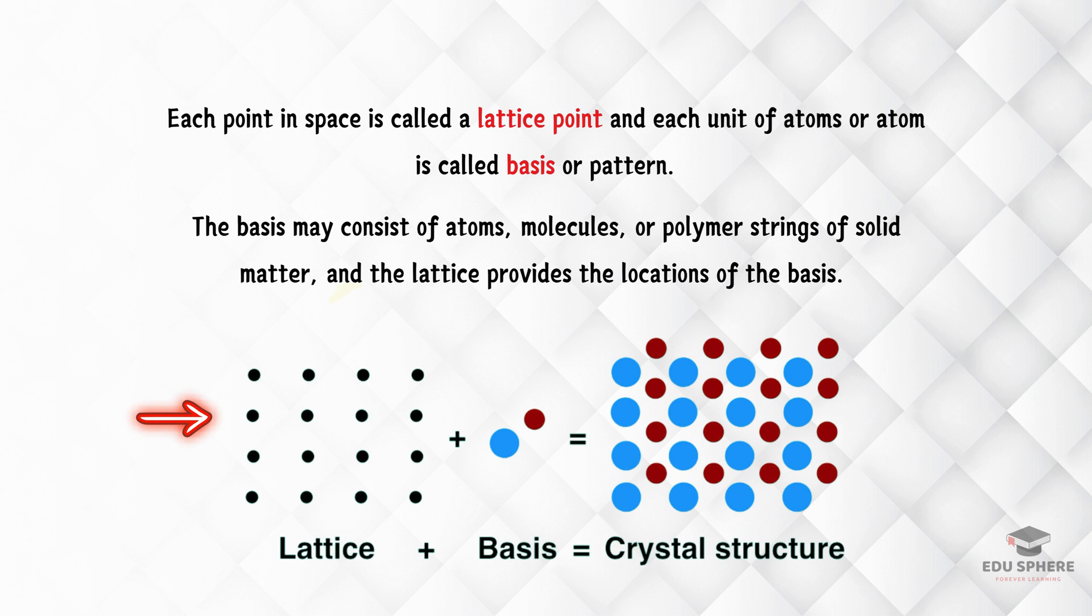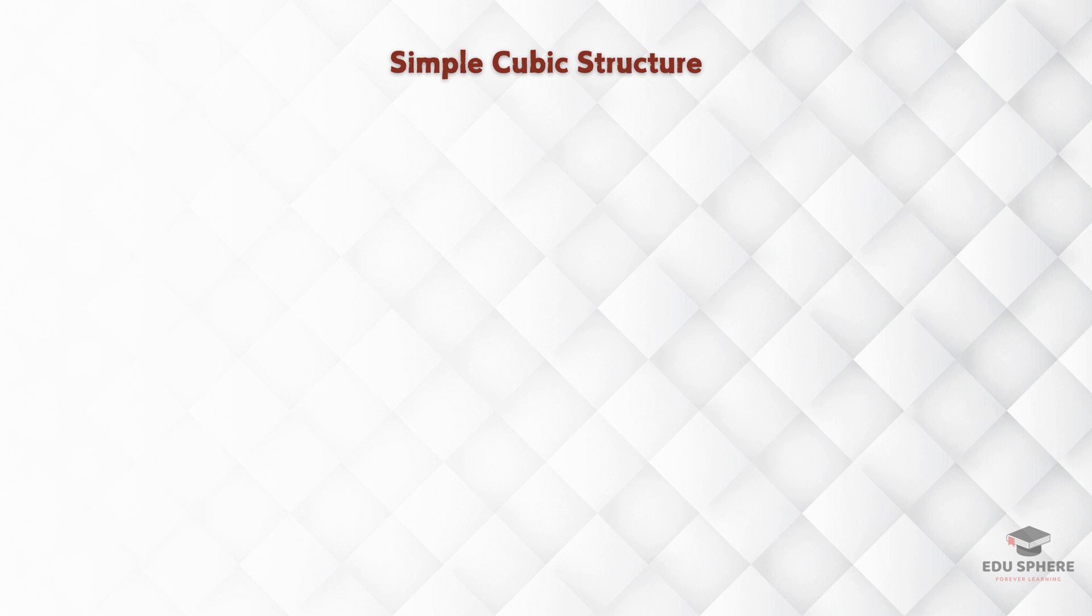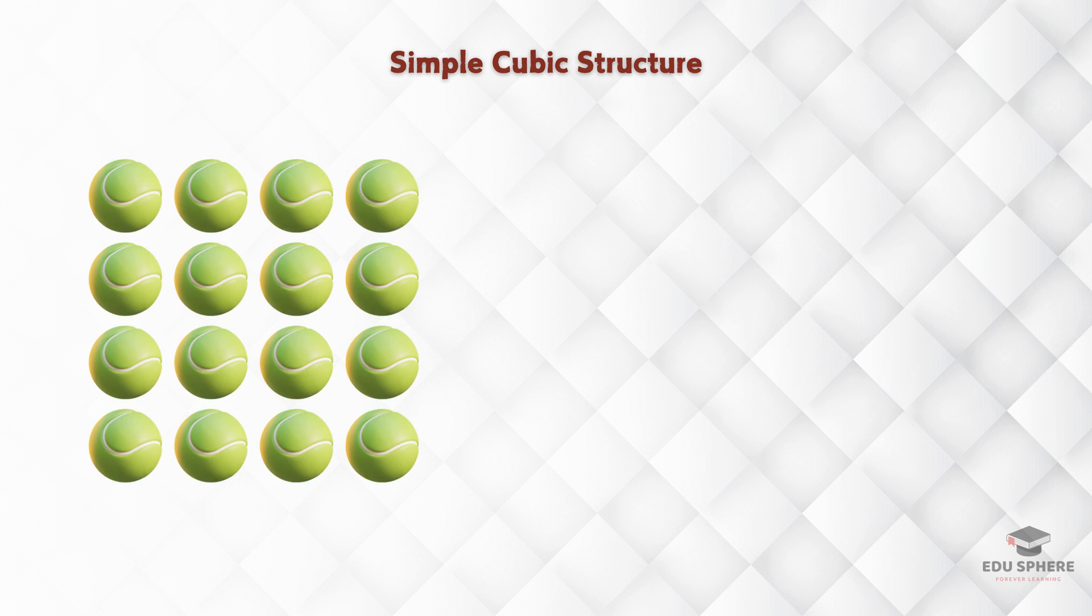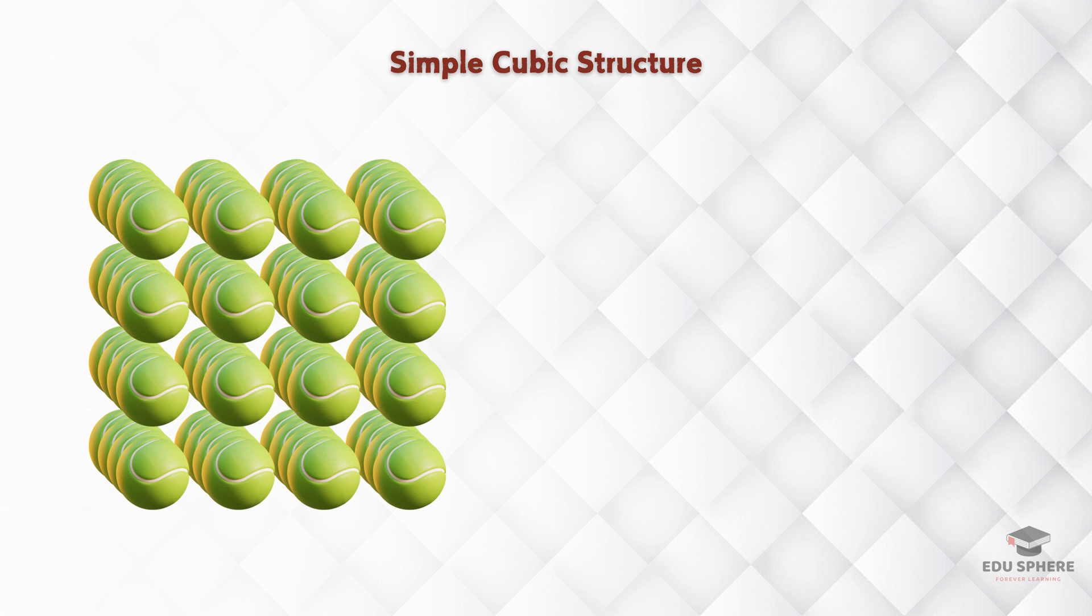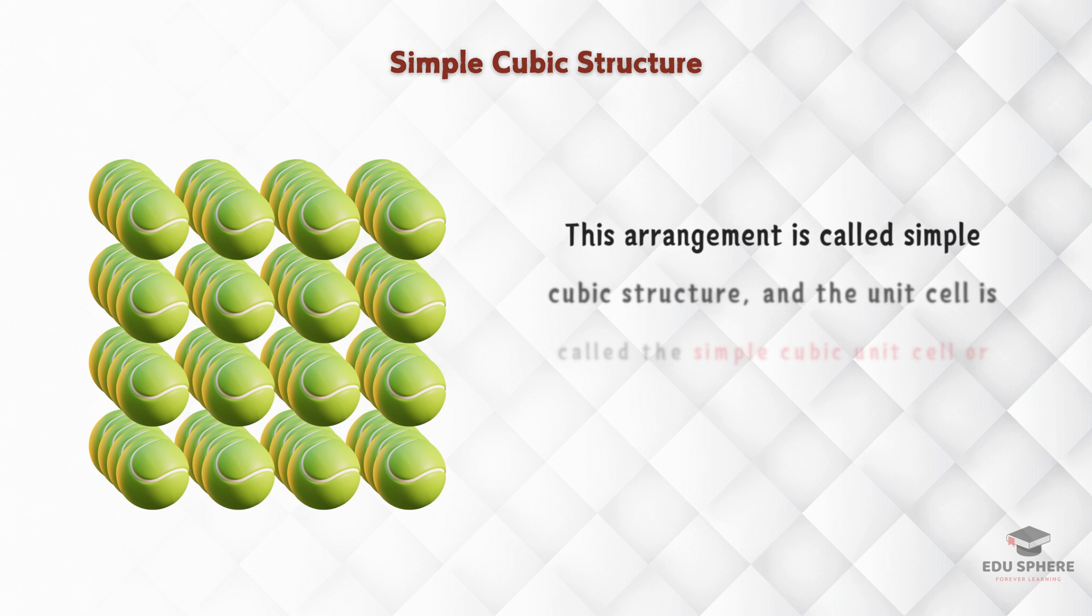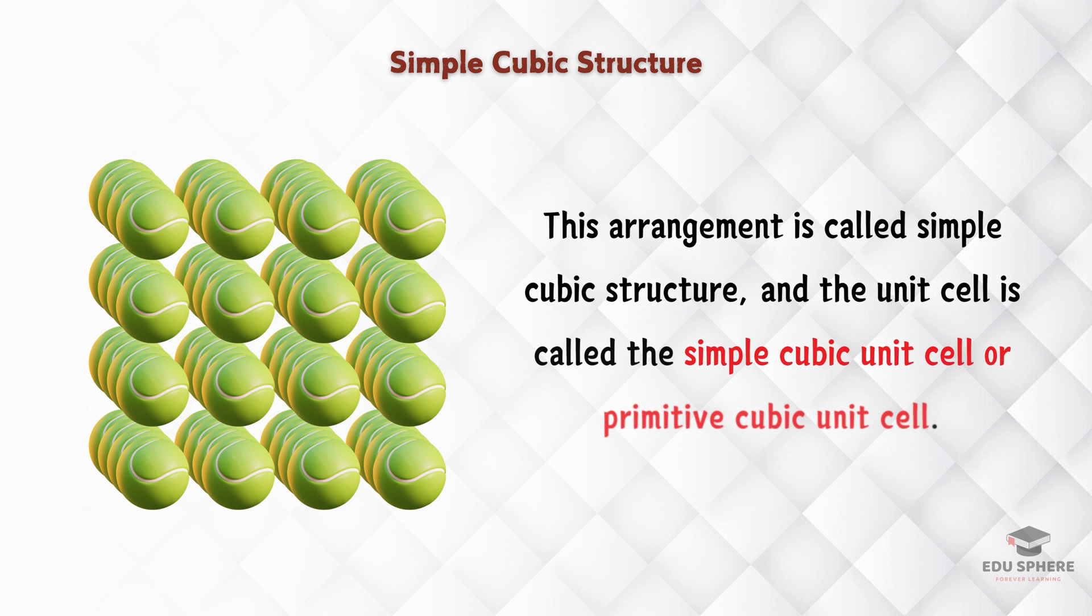Let us begin our investigation of crystal lattice structure with the most straightforward structure and the most basic unit cell. To visualize this, imagine taking a large number of identical spheres, such as tennis balls, and arranging them uniformly in a container, with each sphere directly above another, as illustrated in this figure. This arrangement is called simple cubic structure, and the unit cell is called the simple cubic unit cell or primitive cubic unit cell.